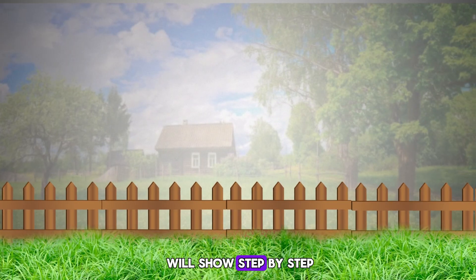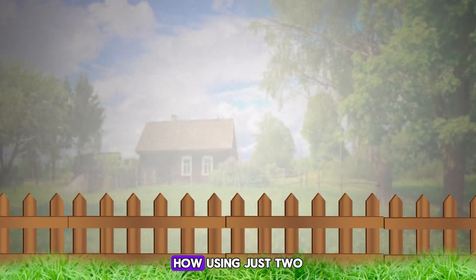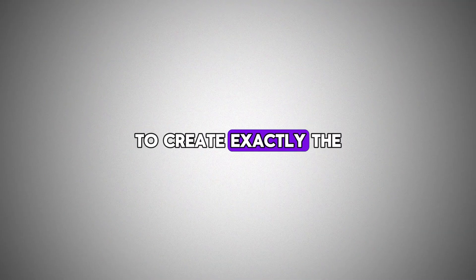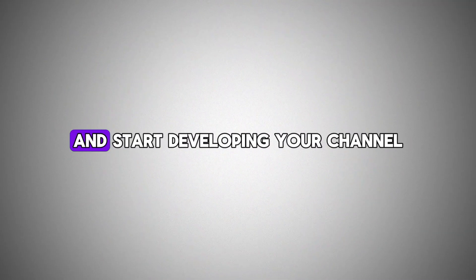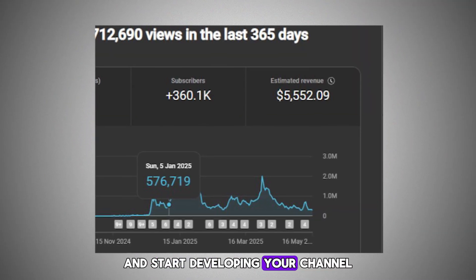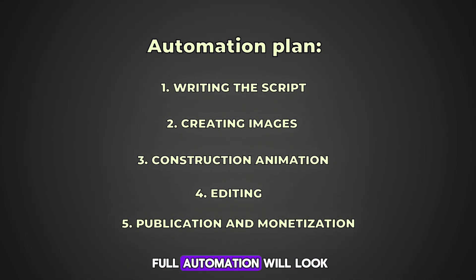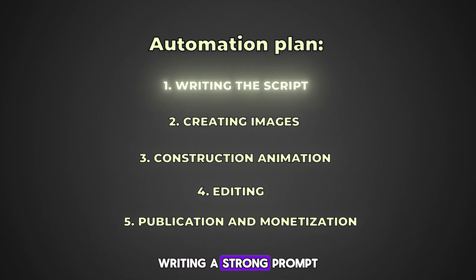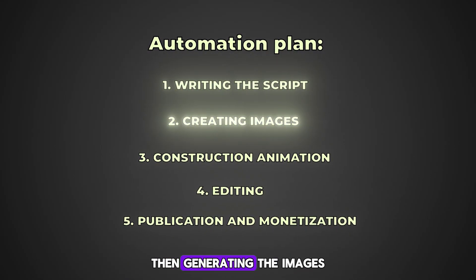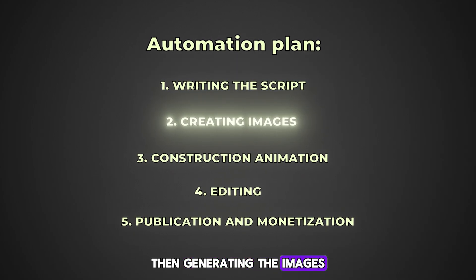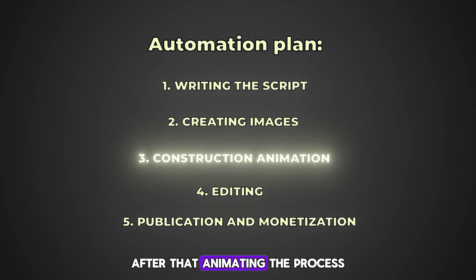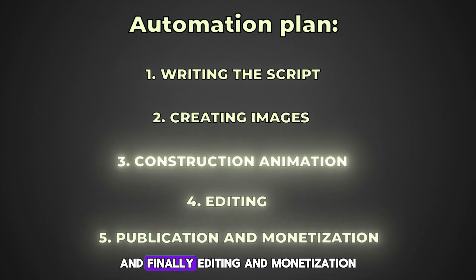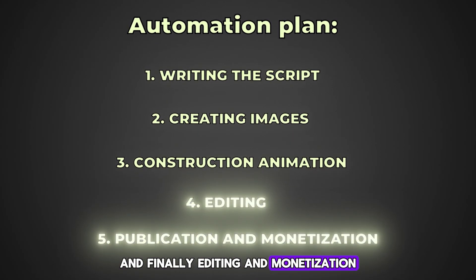In this video, I will show step-by-step how, using just two neural networks, to create exactly the same videos and start developing your channel today. Our plan for full automation will look like this: writing a strong prompt for two images, then generating the images, after that animating the process from an empty plot to a finished house, and finally editing and monetization.